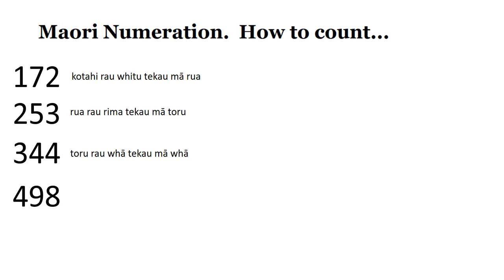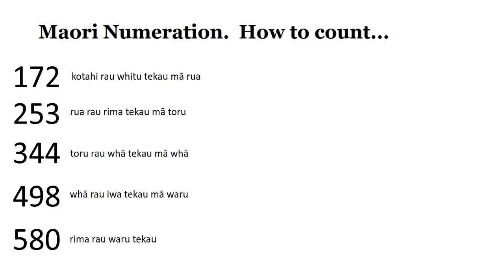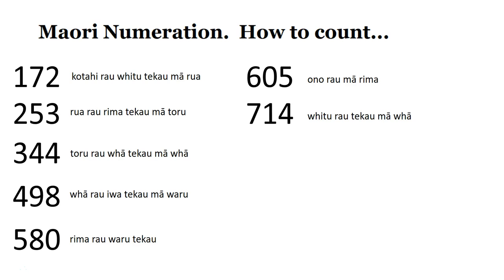498 — we say whā rau, iwa te kau mā waru. So four hundreds, nine tens, and we add eight. 580 — rima rau, waru te kau. Five hundreds and eight tens. 605 — ono rau, mā rima. Six hundreds and we add five. 714 — whitu rau, te kau mā whā. Seven hundreds, one ten, and we add four.